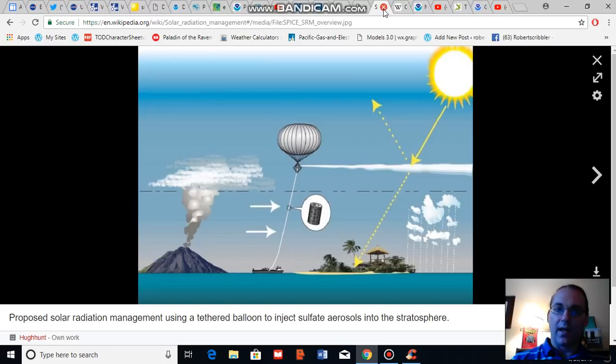Solar radiation management involves pumping a large amount of reflective particles into the upper atmosphere of the earth thereby reflecting some sunlight back, which results in less sunlight getting into the lower atmosphere and interacting with the higher levels of carbon dioxide and thereby keeping the earth a bit cooler.